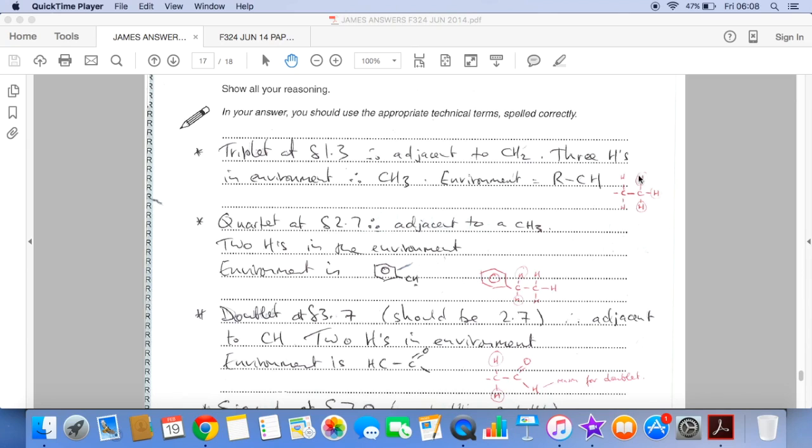So straight away you can see I can say that we must have this feature in molecule H. So it's these protons here causing the peak. And they're adjacent to a CH2, so it's coming out as a triplet. And obviously the shift value is corresponding with an RCH environment.